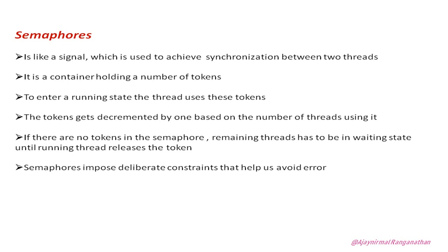A semaphore is a container which holds many tokens. For a thread to enter into a running state, the thread uses the token and the token gets decremented by one based on the number of threads using it. If there are no tokens remaining in the semaphore, the thread has to be in a waiting state until the threads which used the token release the token. Semaphores impose deliberate constraints that help the programmer avoid errors.